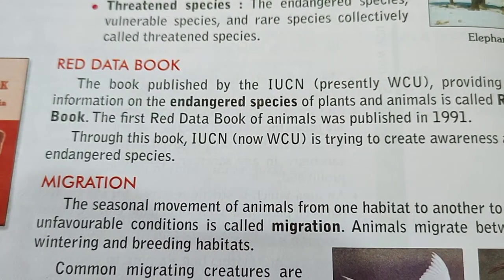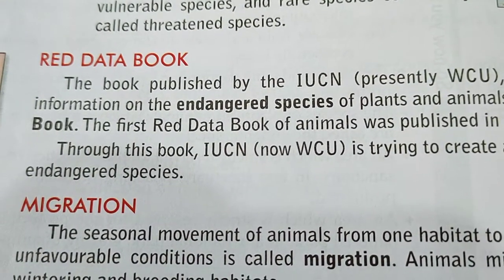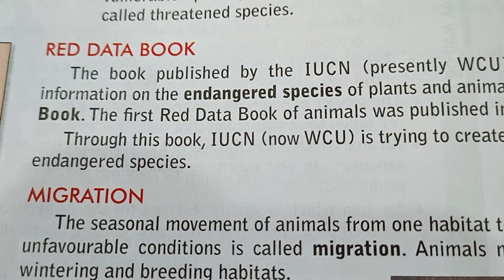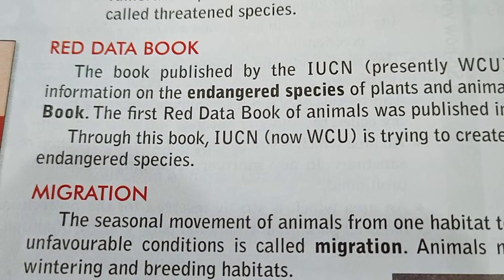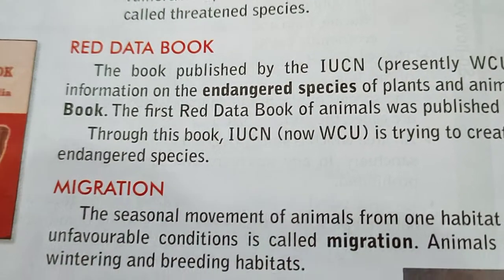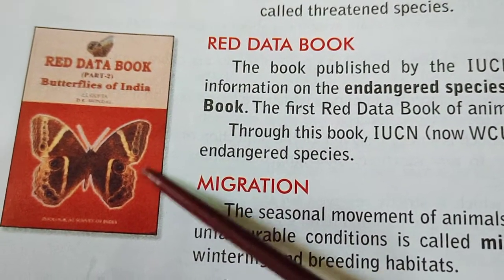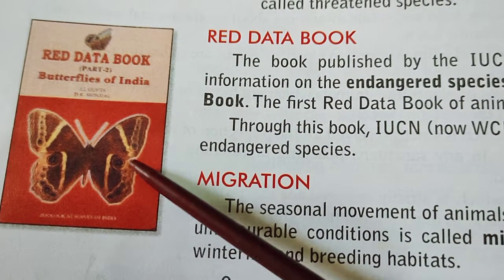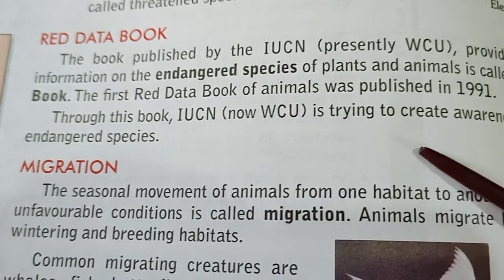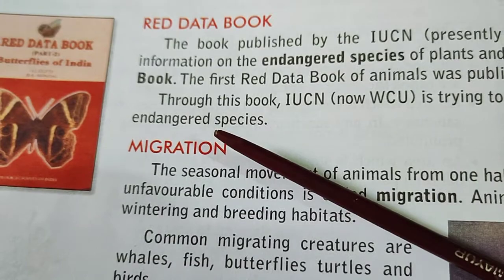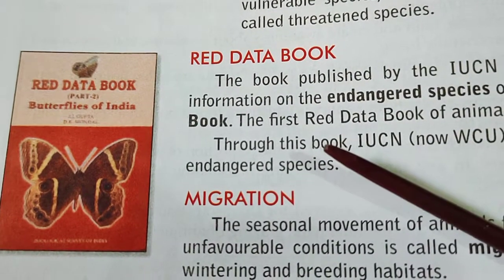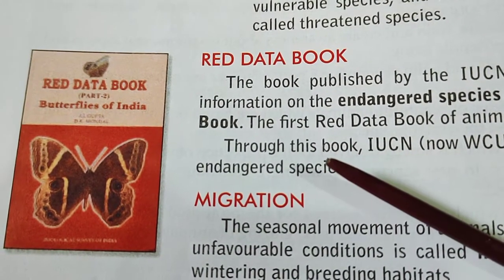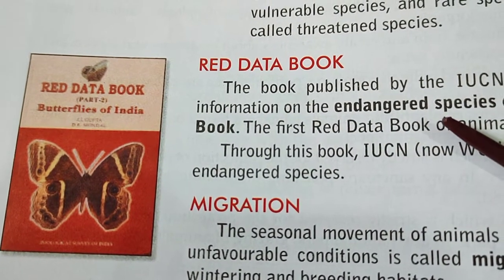The first Red Data Book of Animals was published in 1991. The Red Data Book is a very important source of information related to the different types of threatened species on earth. In this book, we can find the list of names of endangered species of animals. Through this book, IUCN is trying to create awareness about endangered species among human beings.